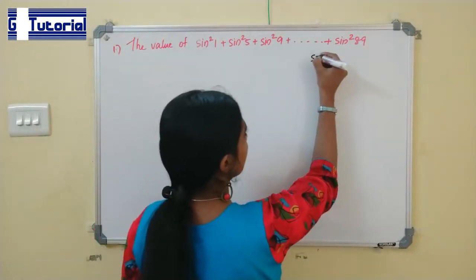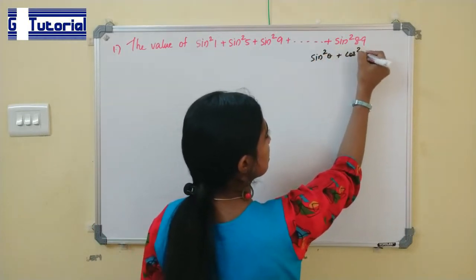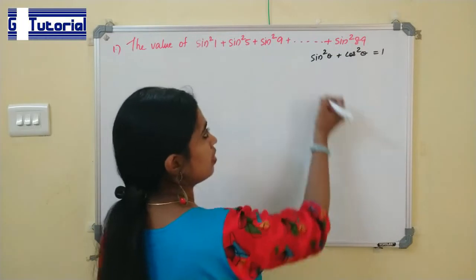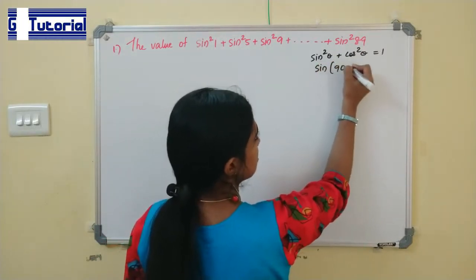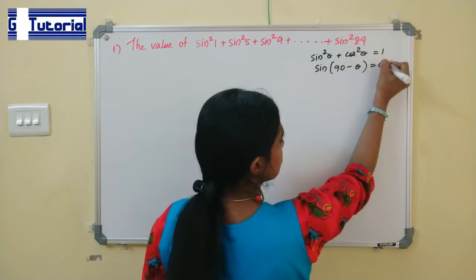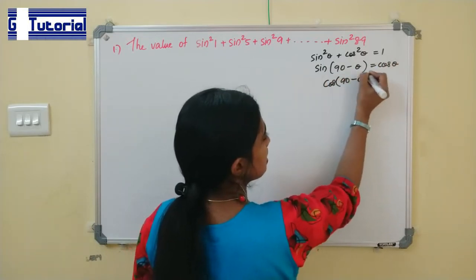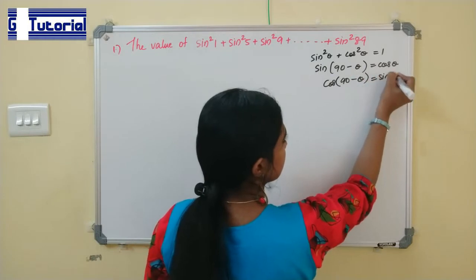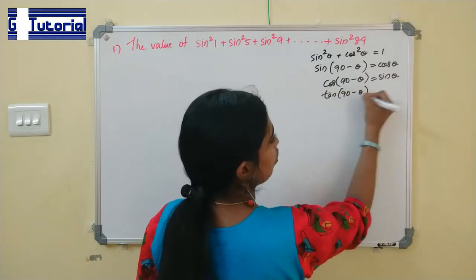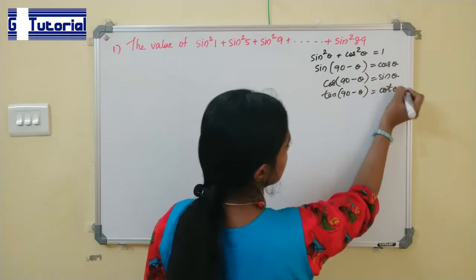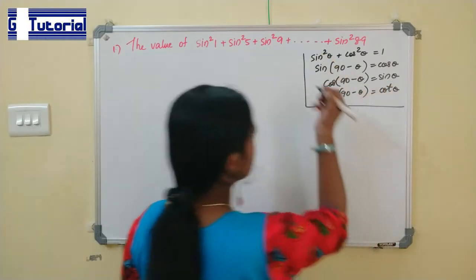The Pythagorean identity: sin²θ + cos²θ = 1. Also, you should know that sin(90° - θ) = cosθ, and cos(90° - θ) = sinθ. Also, tan(90° - θ) = cotθ. These are the prerequisites to do this problem.